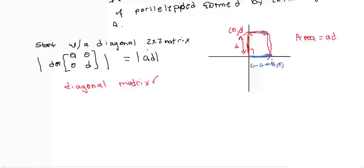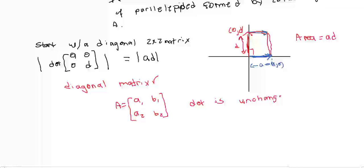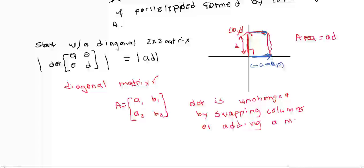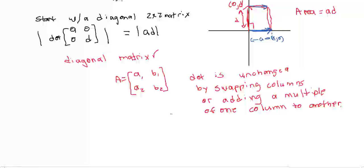Now let's see what happens if we don't have a diagonal matrix. Say our matrix looks like A1, A2, B1, B2. We know that the determinant of this matrix is unchanged by swapping columns or adding a multiple of one column to another. My claim is that we can then turn this into a diagonal matrix, as long as it is invertible.